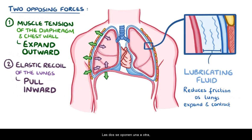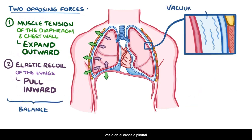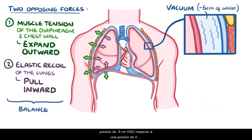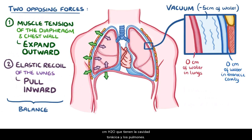The two pull on each other, creating a balance between the forces that creates a slight vacuum in the pleural space. It results in the pleural space having a pressure of minus 5 cm of water, relative to a pressure of 0 cm of water in both the thoracic cavity and the lungs.